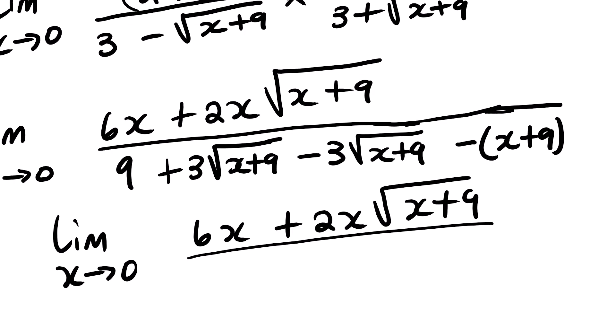Continuing to simplify the denominator: negative square root of x plus 9 multiplied by square root of x plus 9 gives negative x plus 9, or negative (x plus 9). Looking at the like terms in the denominator: positive 9 and negative 9 cancel out, and positive 3 root of x plus 9 and negative 3 root of x plus 9 also cancel. We are left with just negative x.